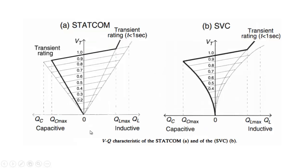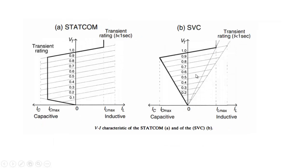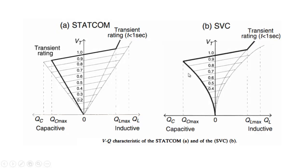For the VQ characteristics, with voltage on one axis and Q on the other: since Q equals current multiplied by voltage, as voltage decreases the reactive power also decreases because current is constant for the STATCOM. For the SVC, since the current itself depends on voltage, the reactive power depends on the square of the voltage — it equals V² divided by Xc. As voltage decreases more, there is a greater decrease in reactive power.